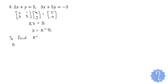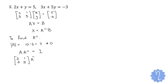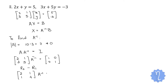This time we will find A inverse by using the row transformation method. Determinant = 10 − 3 = 7, which is not equal to 0, so A inverse exists. We set up A · A⁻¹ = I: [2, 1 / 3, 5] · A⁻¹ = [1, 0 / 0, 1].